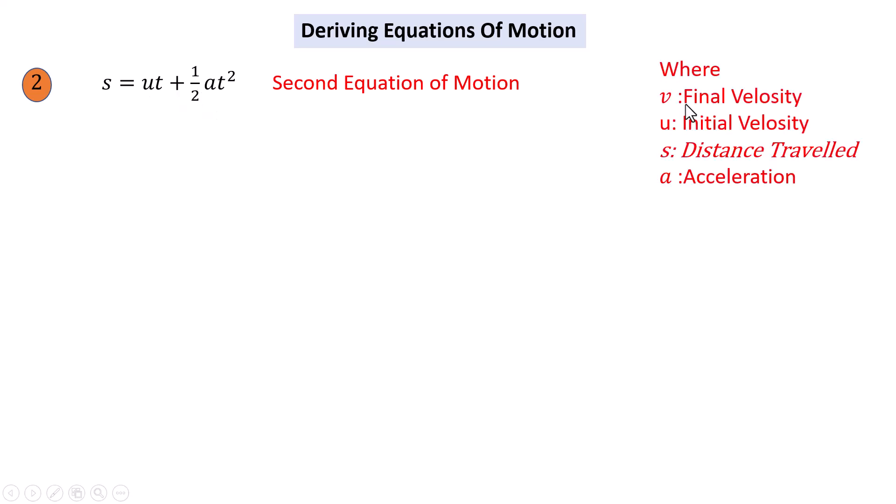That is the second equation of motion, where v is final velocity, u is initial velocity, s is distance traveled, and a is acceleration.